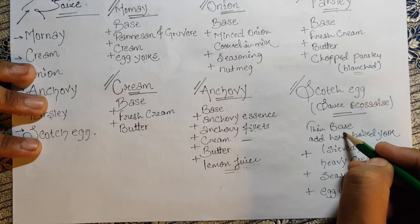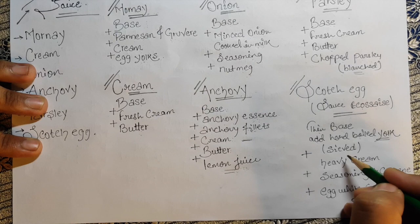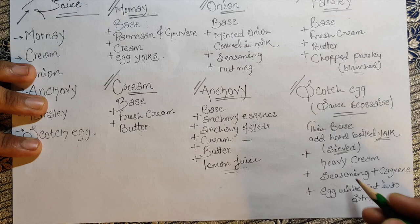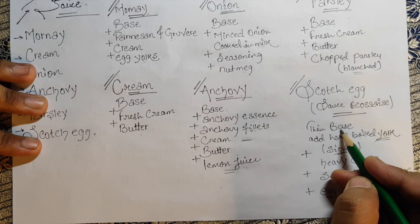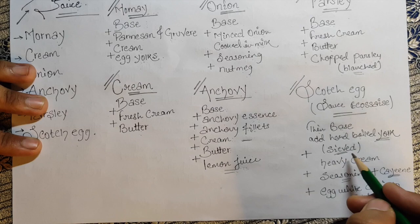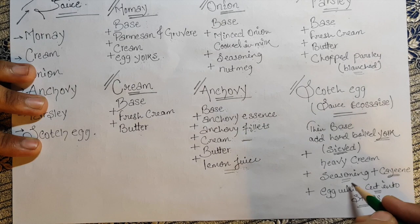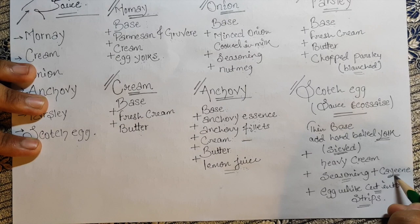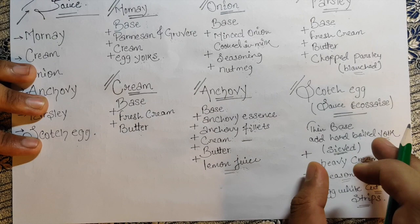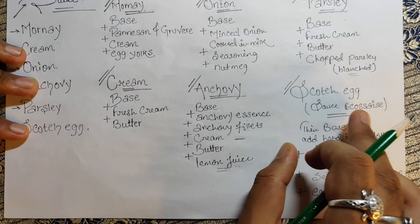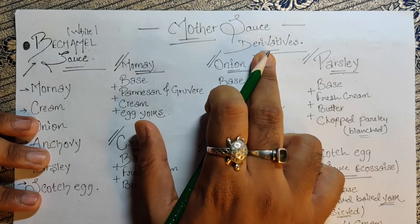For Scotch egg sauce: use thin béchamel as the base. Add hard-boiled egg yolk, then pass it through a sieve. After sieving, add heavy cream and season with salt, pepper, and cayenne powder — a type of chili powder. Finally, add egg whites cut into strips, and your Scotch egg sauce is ready. This sauce is also called egg sauce.